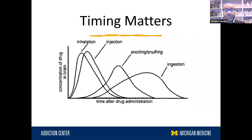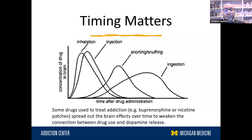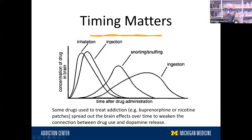There are some drugs to treat addiction that take advantage of that. These include buprenorphine or nicotine patches and nicotine replacement therapies. These have long-acting effects, and so they spread out that dopamine release over time, which effectively weakens the connection between the drug use and the dopamine release. It prevents those kinds of addictive behaviors. These are some of the most useful interventions we have to treat addiction.